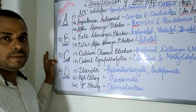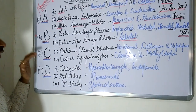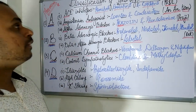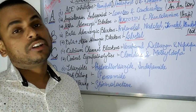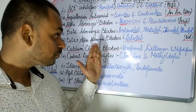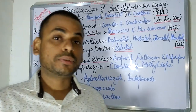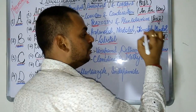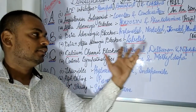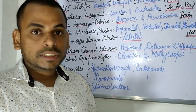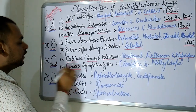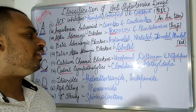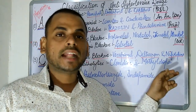Moving on to the next alphabet C. The C letter refers to the calcium channel blockers. The famous drugs used in the treatment of hypertension under this category include Verapamil, Diltiazem, and Nifedipine. The next C refers to the central sympatholytics, with common examples being Clonidine and Methyldopa.